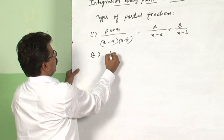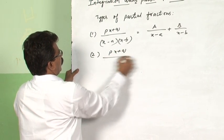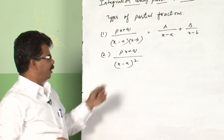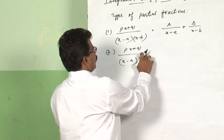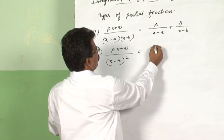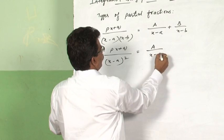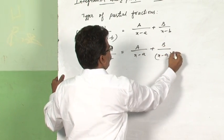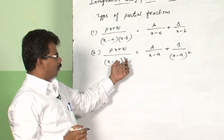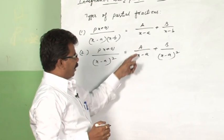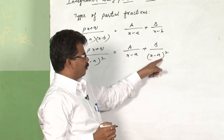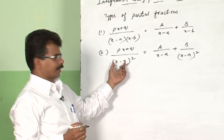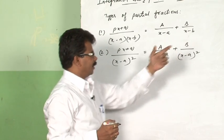The second type is (px + q) divided by (x − a)², where the denominator has a repeated factor. This type of integrand can be resolved into partial fractions as A/(x − a) plus B/(x − a)². If you have (x − a)³, then you write A/(x − a) plus B/(x − a)² plus C/(x − a)³, and so on for higher repeated root factors.